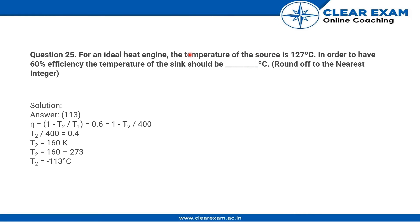So T₂ will be equal to 160 minus 273, which equals minus 113 degrees Celsius. The trick in the question was converting Kelvin to Celsius, as both were given in integers.